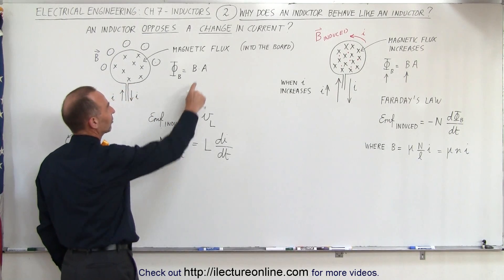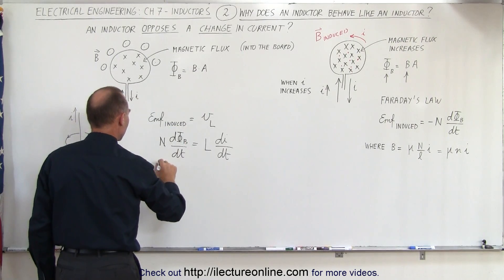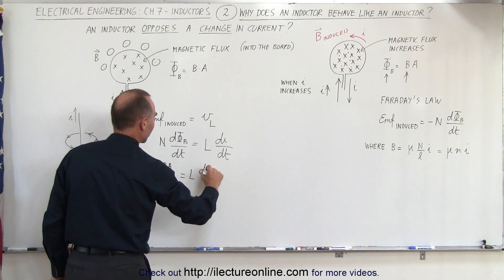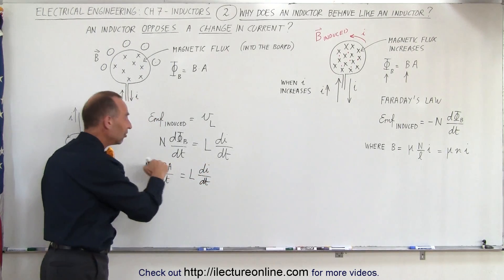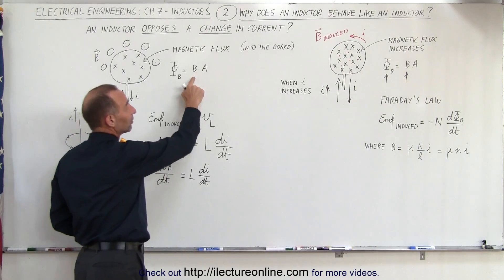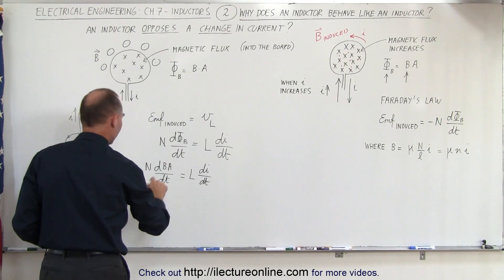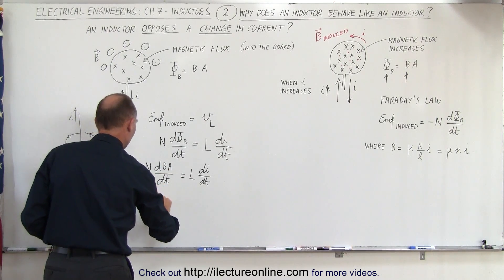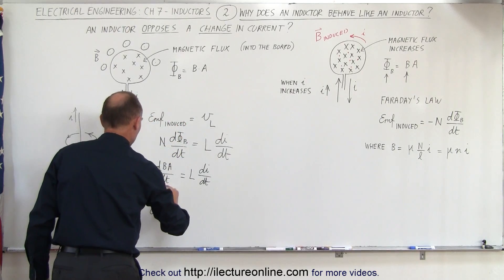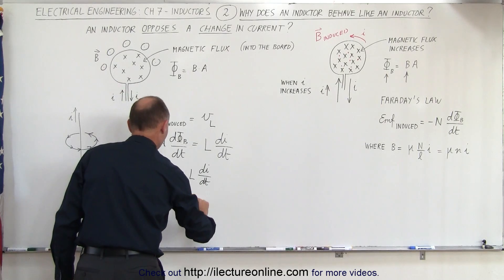The flux is equal to the magnetic field times the cross-sectional area, so we have N × d(B·A)/dt = L × dI/dt. Since the loop stays the same size, the area doesn't change, but the B field does. The magnetic field of the solenoid equals μNI/ℓ, so this becomes N × A × d(μNI/ℓ)/dt = L × dI/dt.